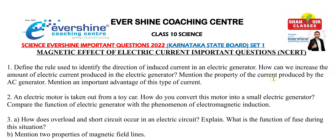Next, mention the property of the current produced by the AC generator. Which property is going to be applied? You have to name the property. Then mention an important advantage of this type of current. If you know the property, you will know which type of current it is. You need to identify whether it is AC or DC — we are using an AC generator — so you know the property, and by using these two conditions, you can tell the advantage of this type of current.